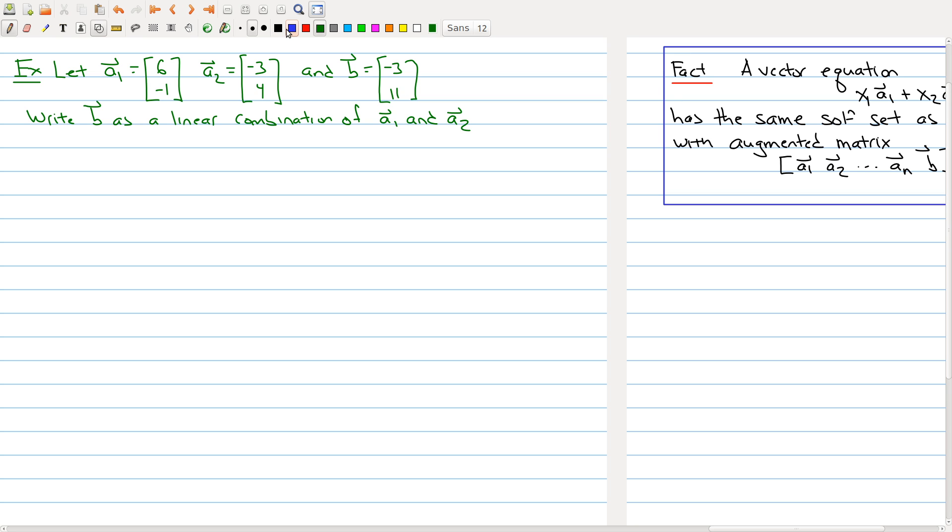So let me just write that more explicitly so you have it in your notes: we want to find c₁ and c₂, my weights, such that c₁ times my first vector [6, -1] plus c₂ times the second vector [3, 4] gives me the third vector which is my vector b, [-3, 11].